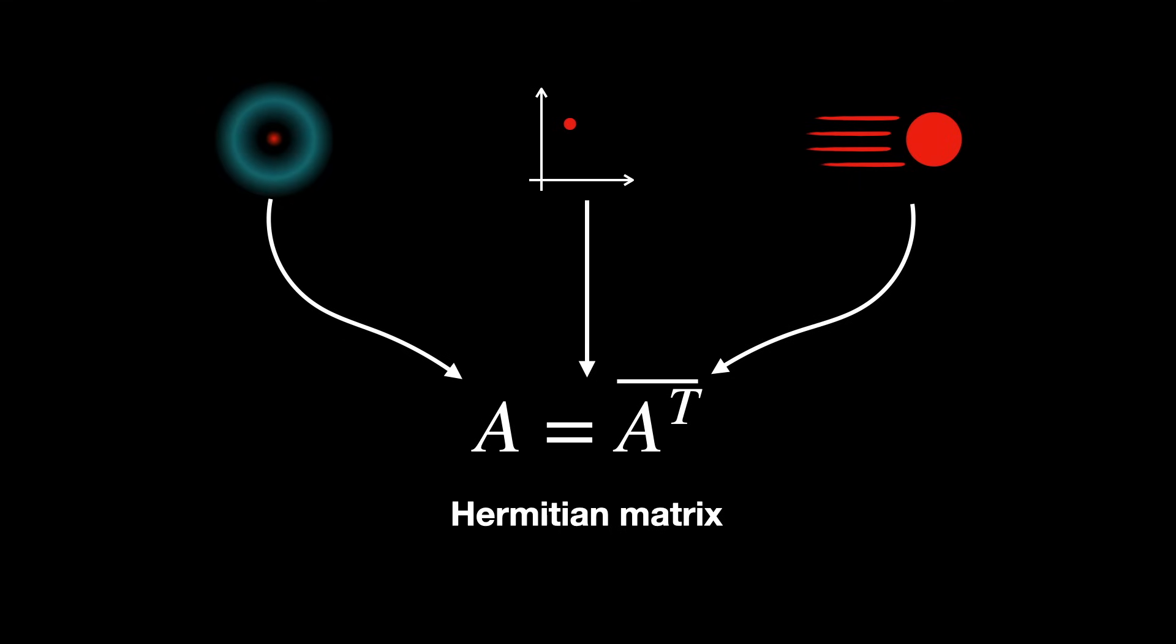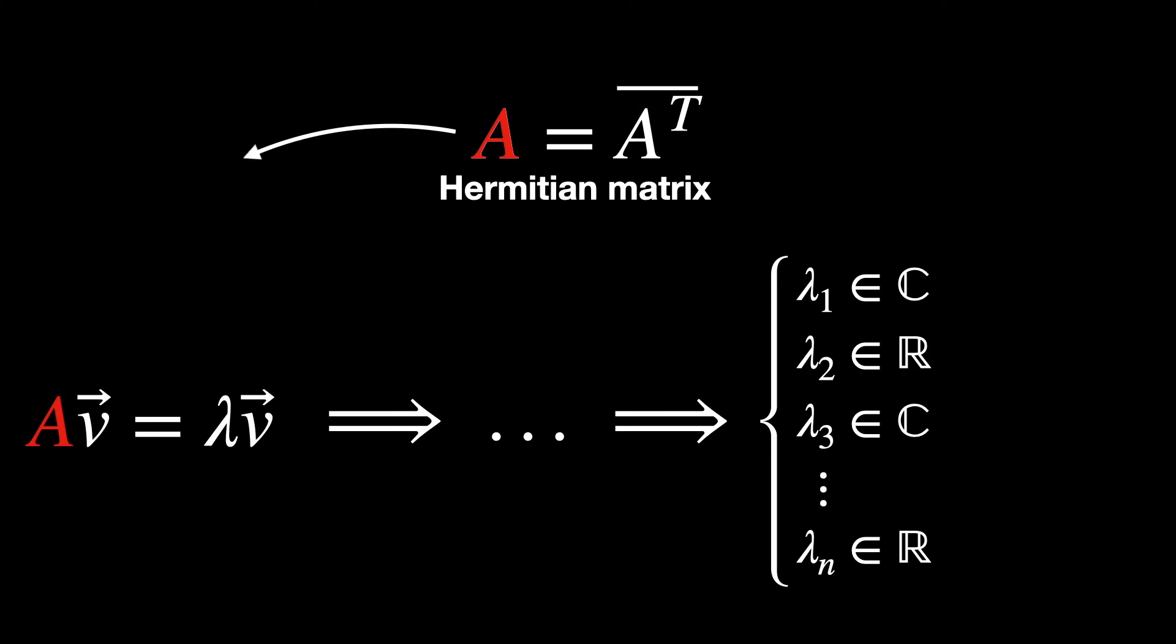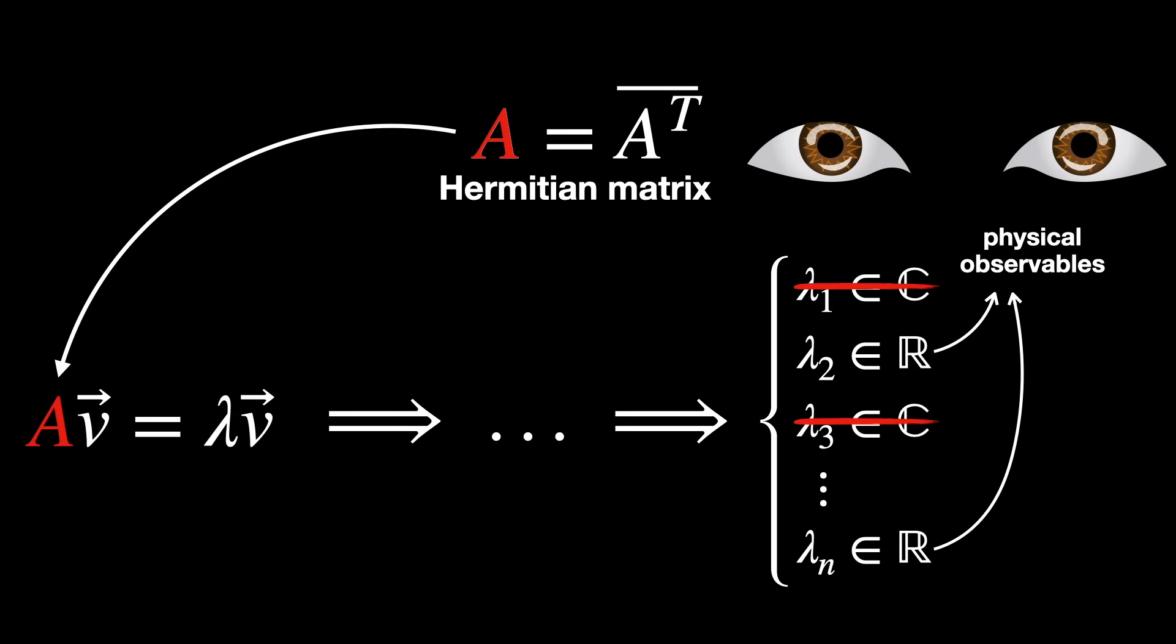or operators, that act on eigenvectors called quantum states, or eigenstates. If the eigenvalues are not real, then they cannot be interpreted as observable quantities in a physical experiment.